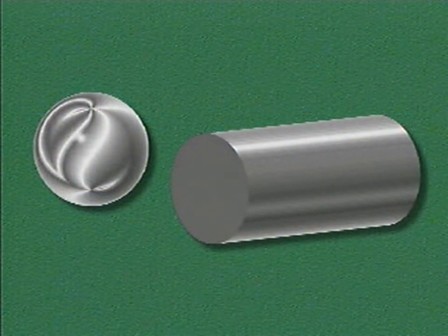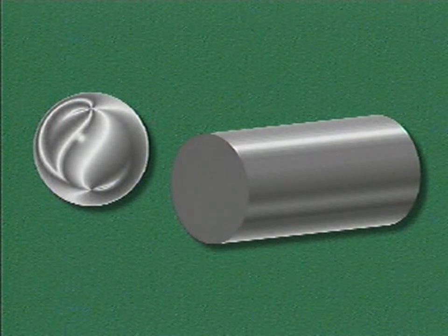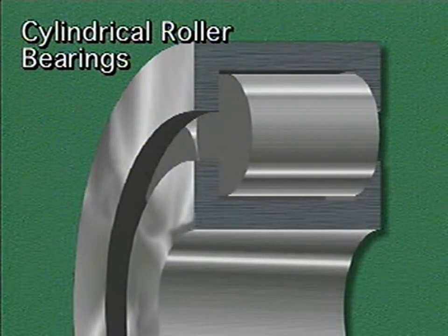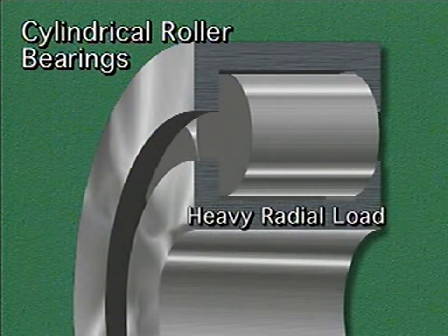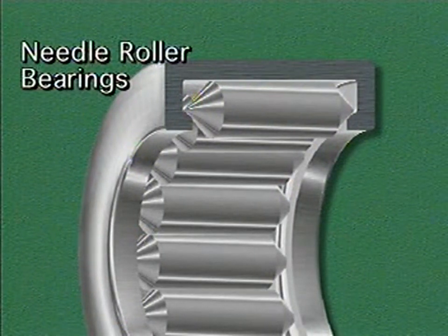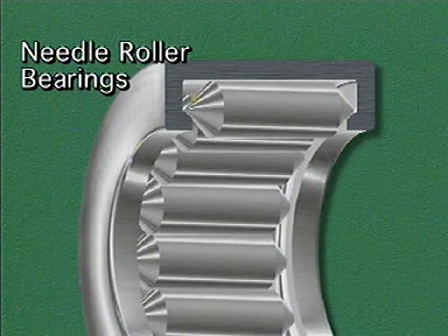The other basic category of rolling contact bearings is roller bearings. Roller bearings can carry more load than ball bearings because rollers are larger than balls, and they spread the load over a greater area. Let's look at some common types of roller bearings. Cylindrical roller bearings have rollers that are shaped like cylinders. These bearings are designed primarily to support heavy radial loads. Needle roller bearings are similar to cylindrical bearings, but the rollers are much thinner. Needle roller bearings can support a great deal of radial load because many of the thin rollers can be put into a bearing.